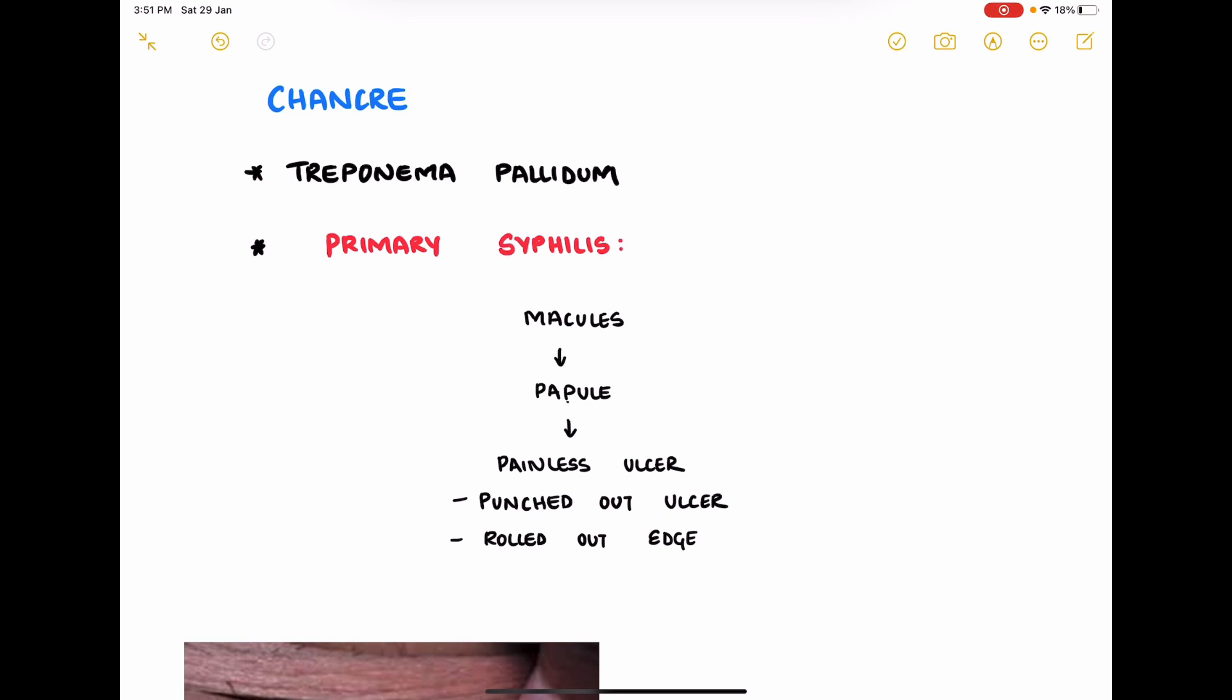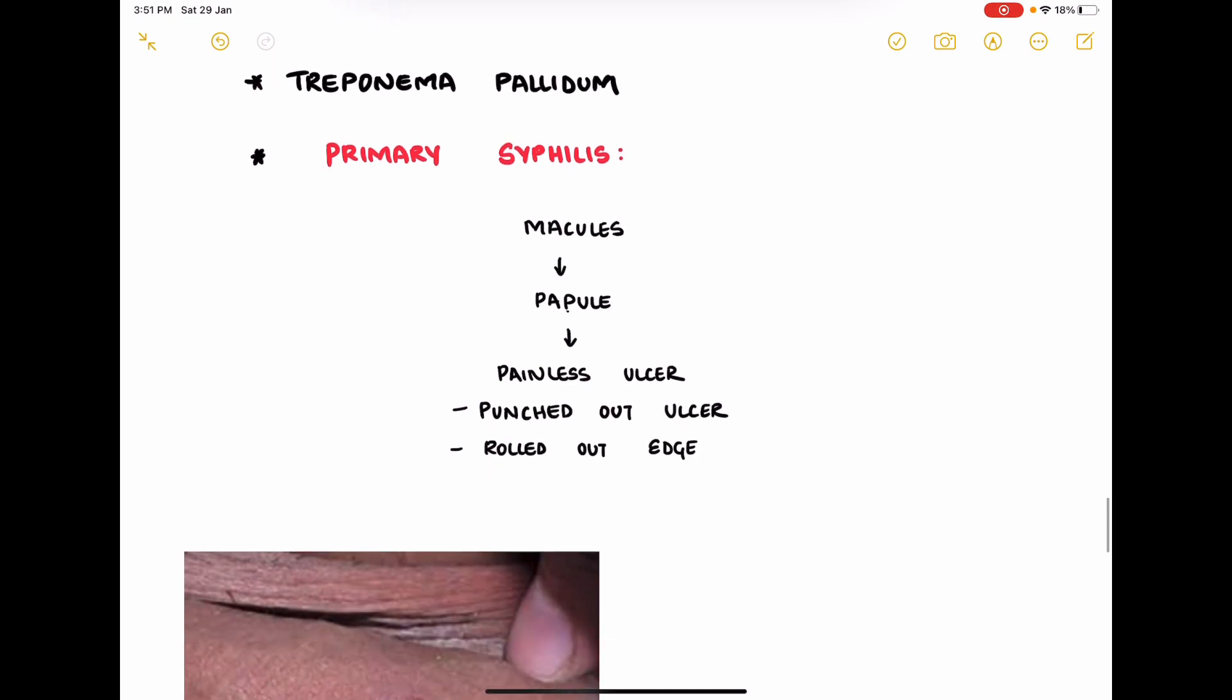Syphilitic chancre will be the last condition, caused by Treponema pallidum. We have primary, secondary, and tertiary syphilis. Primary syphilis is the first time the patient is infected by Treponema pallidum. It starts as macules and papules and develops into painless, hard ulcers in the genital region.